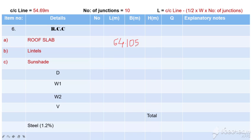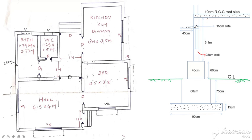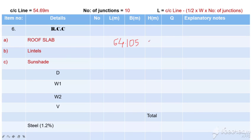The area we get is 64.105. Now, what is the height? The roof slab is 10 cm, so 0.1 meter. So the volume we get is 6.411 m³.